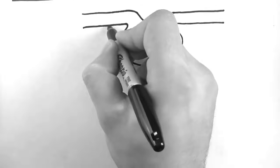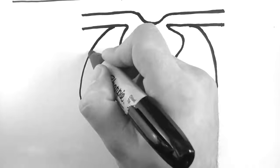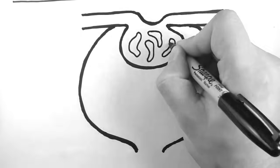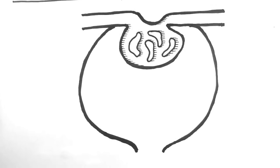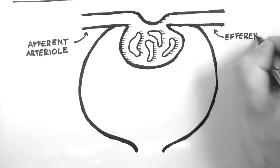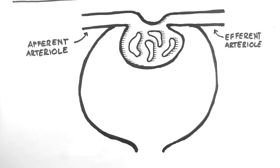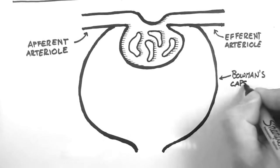Now in order to illustrate these, I'll begin by drawing a glomerulus. You can see the afferent arteriole here, and the efferent arteriole here, and of course in between them is the glomerular capillaries. And out here we have Bowman's capsule.